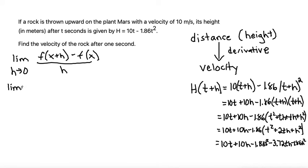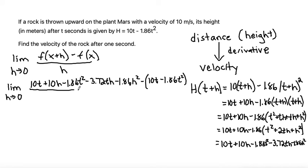I have the limit as h approaches 0 of 10t + 10h - 1.86t² - 3.72th - 1.86h². That's all just the f(x+h) part. Now I need to subtract out just the original function, so I'll put it in parentheses because there's more than one term: (10t - 1.86t²). And all of that is over h from my h in my function.